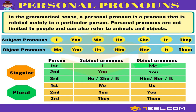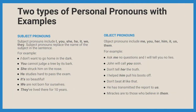The first one is personal pronoun. It is a pronoun that is related to people, animals, or objects. As you can see here, when a person or animal or thing is the subject of a sentence, subject pronouns are used. For example, 'I don't want to go home in the dark.' Who is doing the action here? The subject, I. Hence, I is the subject pronoun here.